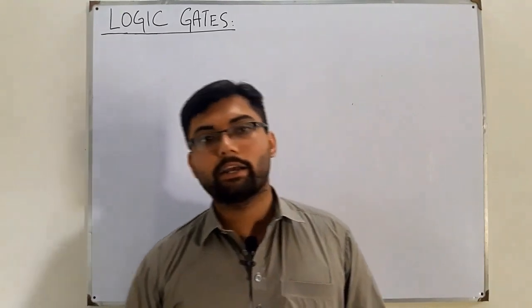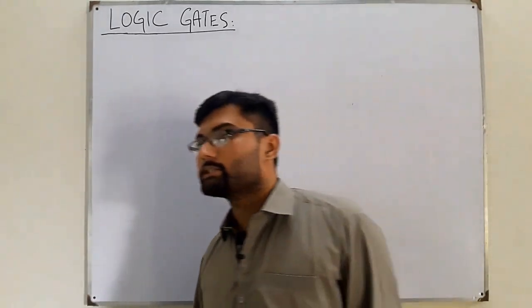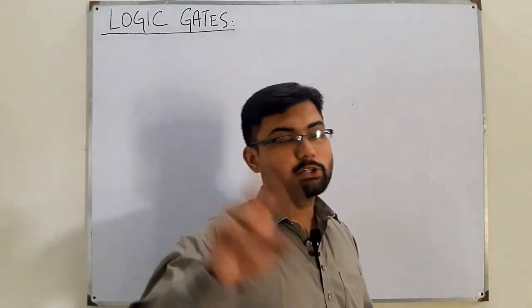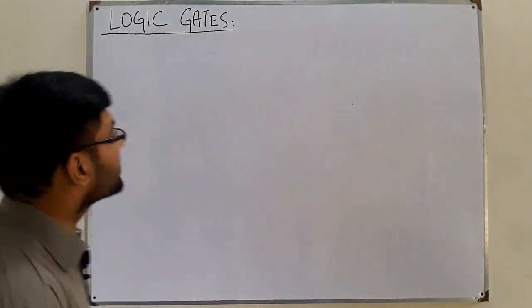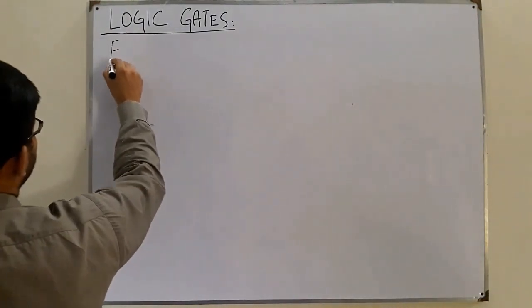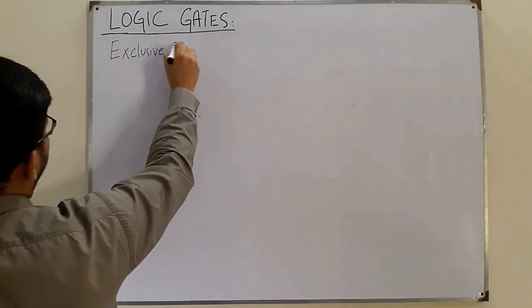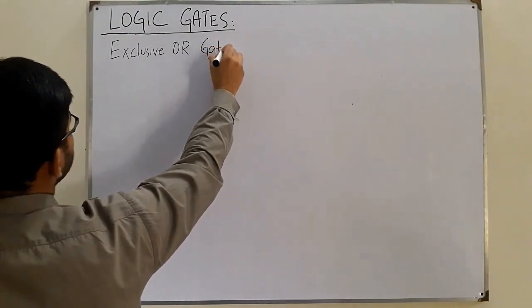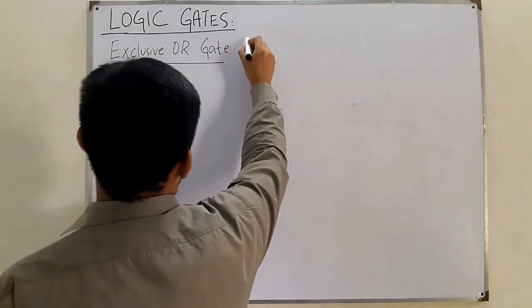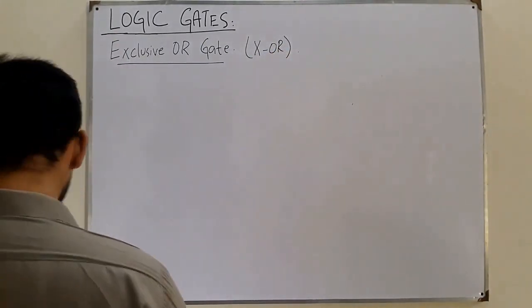Assalamu alaikum. Continuing our topic of logic gates, today we are left with the arithmetic gates — two in number: the exclusive OR and exclusive NOR gate. First we see the exclusive OR gate, written in short as the XOR gate.